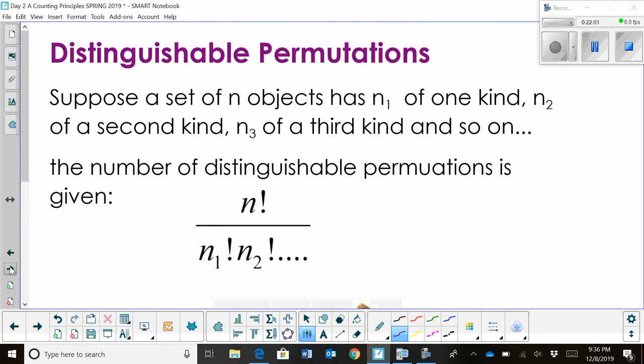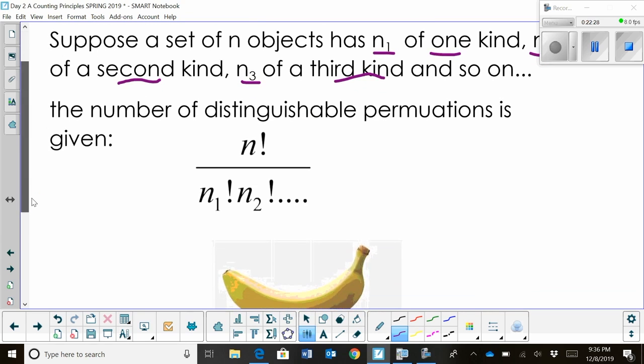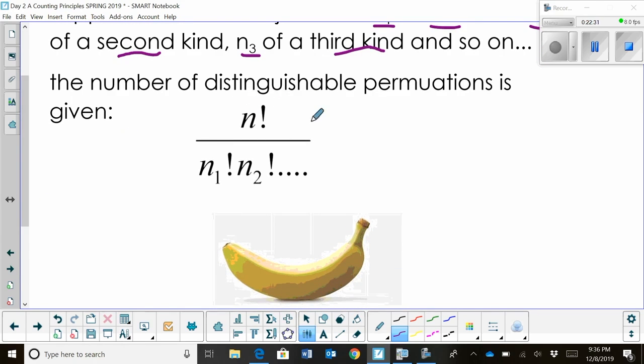Okay, now let's talk about a special case of a permutation. Suppose you have a set of n objects, and some of them repeat. So you have n sub 1, one of the objects is one of a kind, n sub 2, there's two of a kind, n sub 3, there's three of a kind, and so on. So you have repeating objects in a group. Okay, to find the number of permutations, we're going to take n factorial, which is the total number, divided by n sub 1 factorial, n sub 2 factorial, or whatever is being repeated.